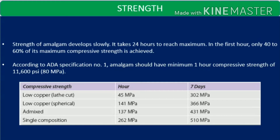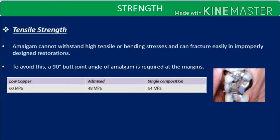Looking at strength values: the one-hour strength for single composition is 262 megapascal and after 7 days it is 510 megapascal. Amalgam cannot withstand high tensile or bending stresses and will fracture. In an improperly designed restoration, the tooth and restoration will move and break apart. To avoid this, a 90-degree butt joint is required at the margins. The tensile strength values are: low copper alloys — 60 megapascal; admixed — 48 megapascal; single composition — 64 megapascal.